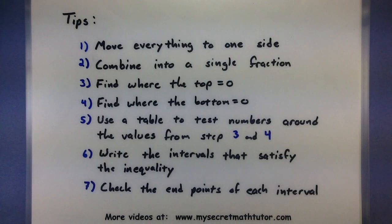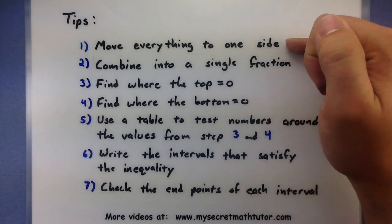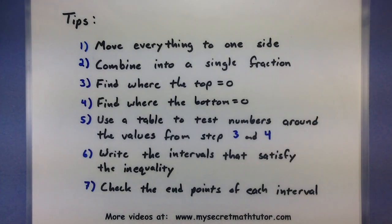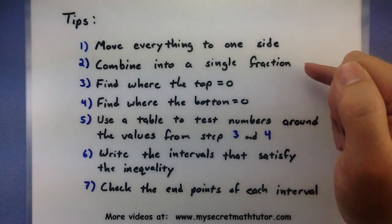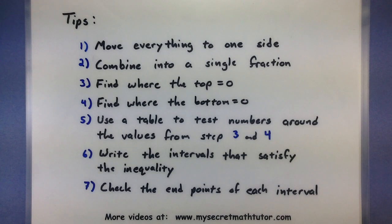When we have a rational inequality, the very first thing we want to do is get everything over onto one side so that it's in relation to zero. Next, we need to combine everything into a single fraction. This will really help us find our critical values.